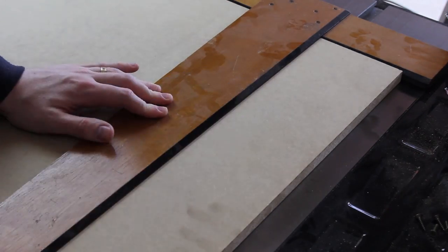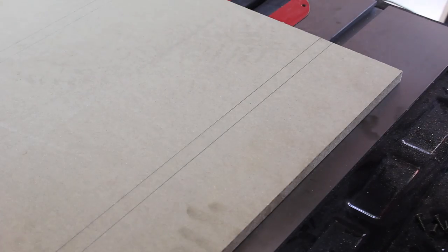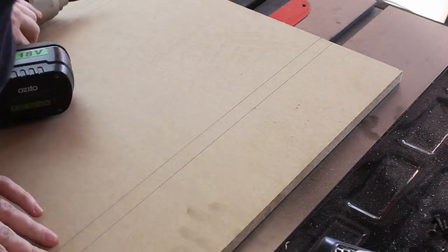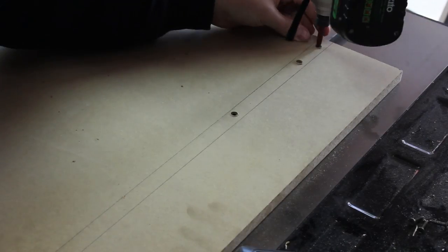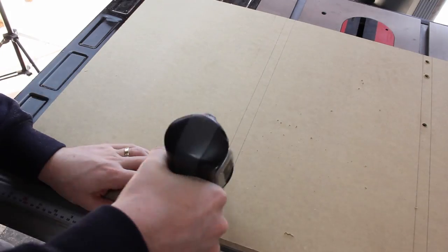I could then mark out the miter slots using a large square and pre-drill some holes for some screws. I also countersunk these so that they don't stick up past the surface of the sled, and these will hold the runners in position while I wait for the glue to dry.